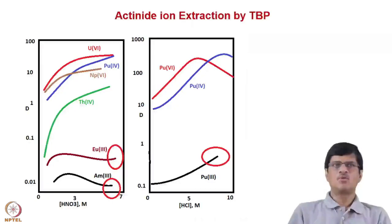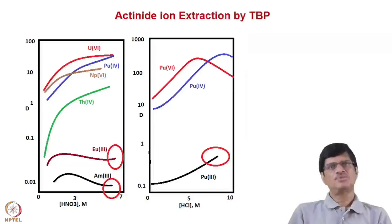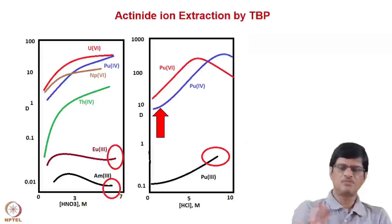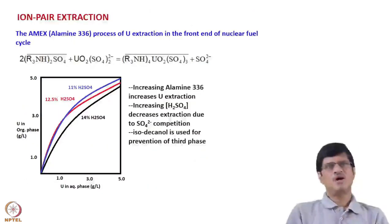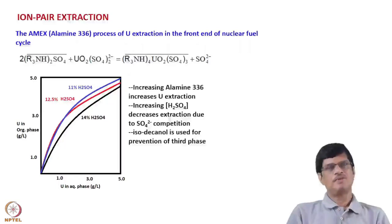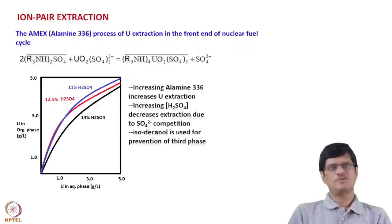In the chloride medium, as seen in the right-side figure, Pu(IV) extraction is lower while Pu(VI) extraction is higher — similar to what is seen in nitrate medium for U(VI) and Pu(IV). The distribution ratio values indicate that plutonium extraction is relatively larger in HCl medium compared to the nitric acid medium.